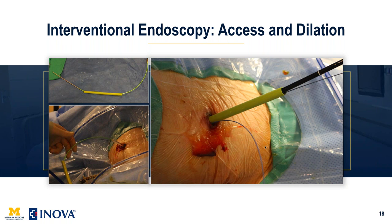We can do endoscopy on the first try. If we get access to the gallbladder with a needle, place a wire, we can dilate the tract up instantly and visualize with the endoscope. For the gastrointestinal tract, we can place primary gastrostomy tubes and in the process use the endoscope to evaluate the GI tract at that time. No matter the access — biliary tree, gallbladder, stomach, or kidney — you need a track to the organ. For flexible scopes, we use a peel-away sheath two French larger than the endoscope, placing two safety wires through it.